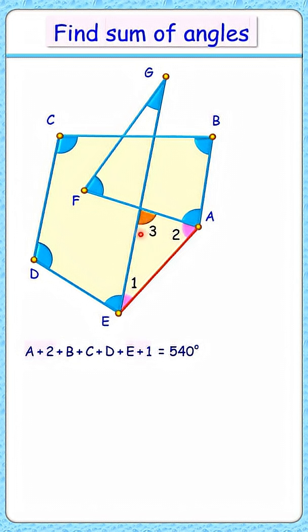Also let's name this angle as angle 3. Now in this triangle, applying angle sum property, we'll get 1 plus 2 plus 3 is 180.